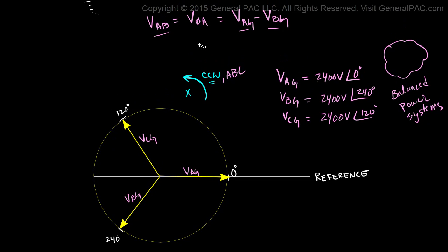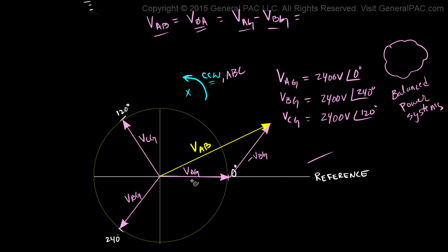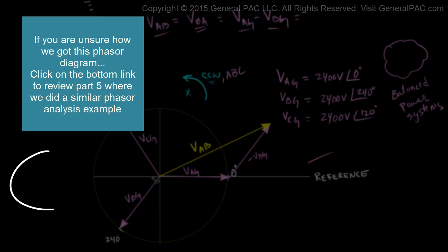Now, we said in our equation that the line-to-line voltage across line A and line B, which essentially equals voltage across our phase A winding for our delta connection, is equal to Vag minus Vbg. So here is Vag. We're going to perform the head-to-tail method and subtract Vag minus Vbg.